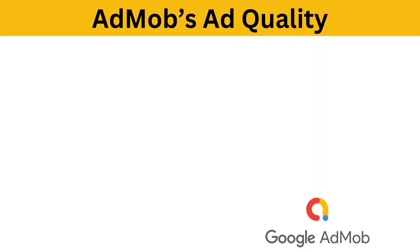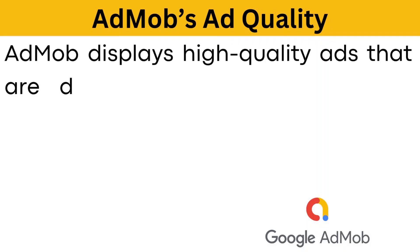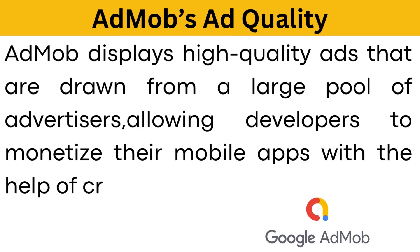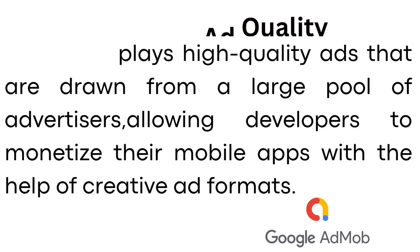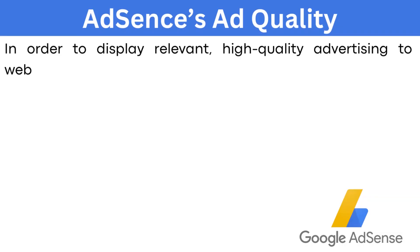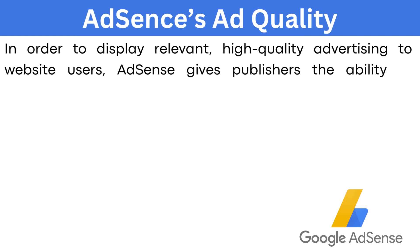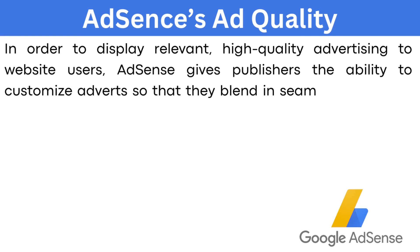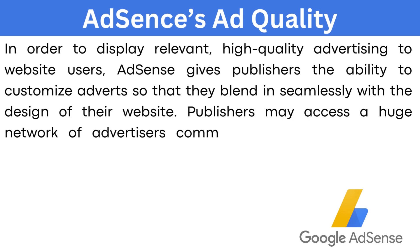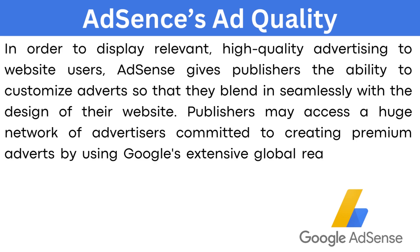AdMob's ad quality: AdMob displays high-quality ads drawn from a large pool of advertisers, allowing developers to monetize their mobile apps with the help of creating ad formats. AdSense's ad quality: in order to display relevant high-quality advertising to website users, AdSense gives publishers the ability to customize adverts so that they blend in seamlessly with the design of their website. Publishers may access a huge network of advertisers committed to creating premium adverts by using Google's extensive global reach and strict quality criteria.